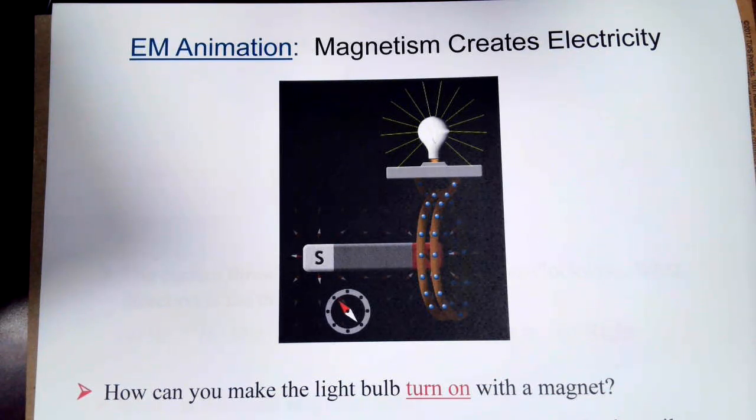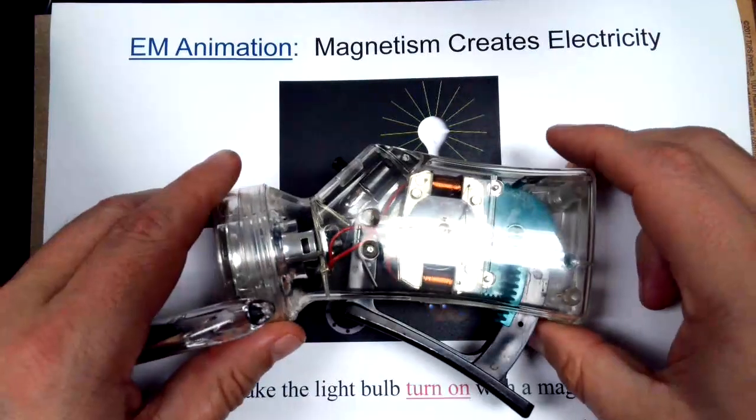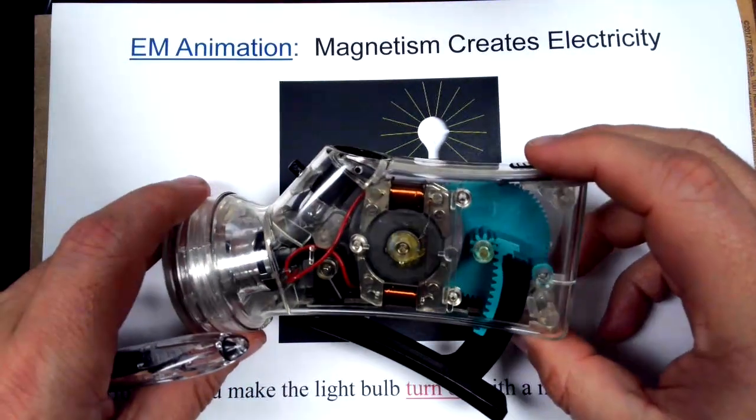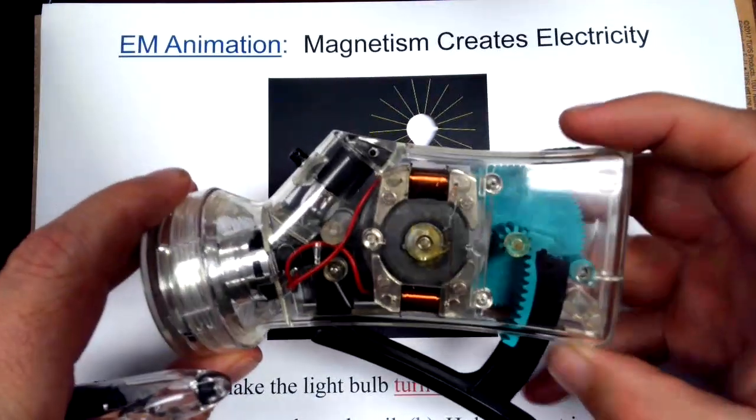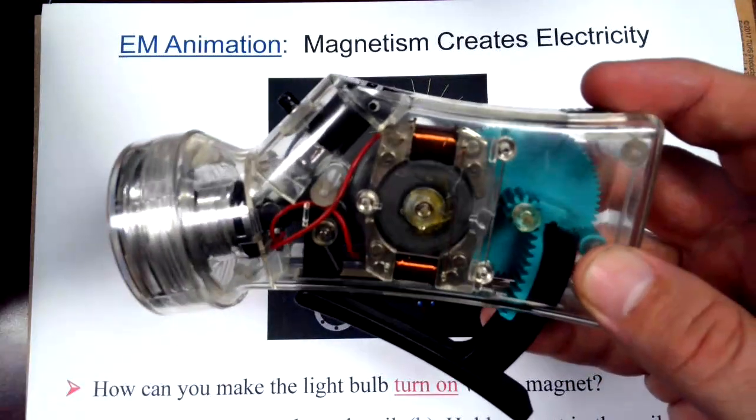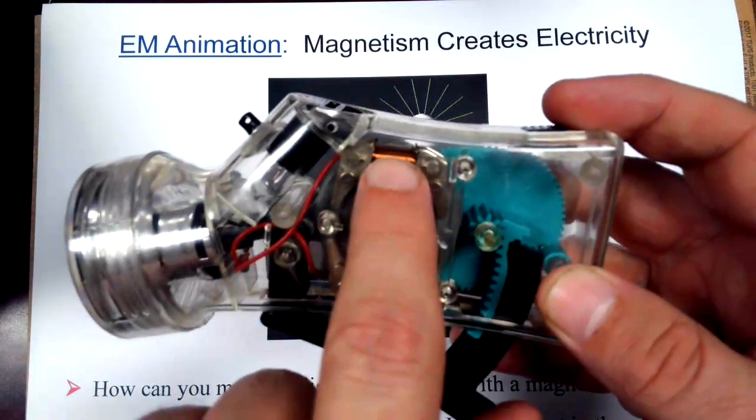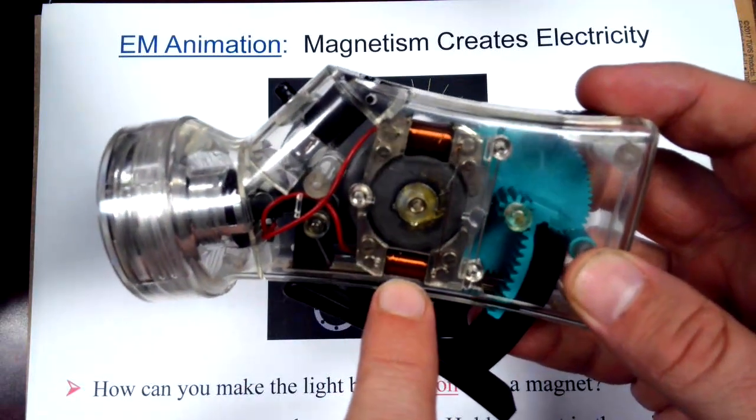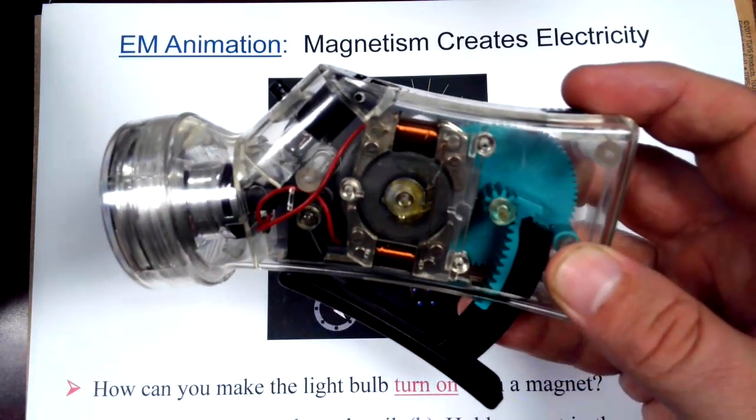For a quick demo of this, I have basically a flashlight. Here you can see the two copper coils on the sides, and then in the middle here, this is a magnet. This is like a flywheel connected to a permanent magnet.